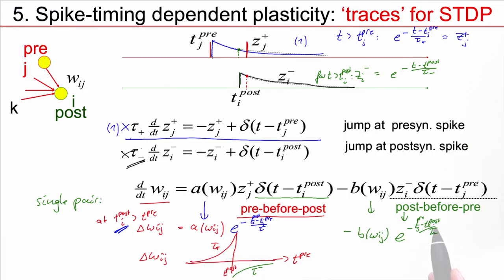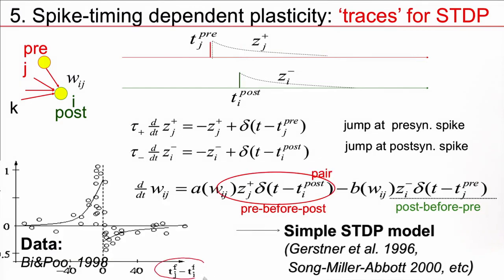If pre is after post, then I am on this side here. So, the total weight change can be written as a function of t_pre minus t_post. So, the result of this is that as a function of pre minus post, I get an exponential window with two sides and a jump in between, and the jump size corresponds to these values a and b.